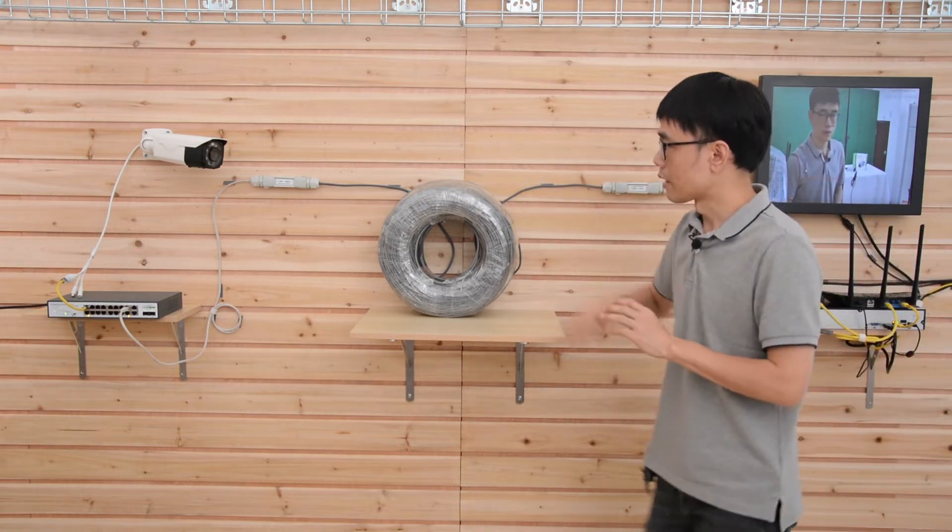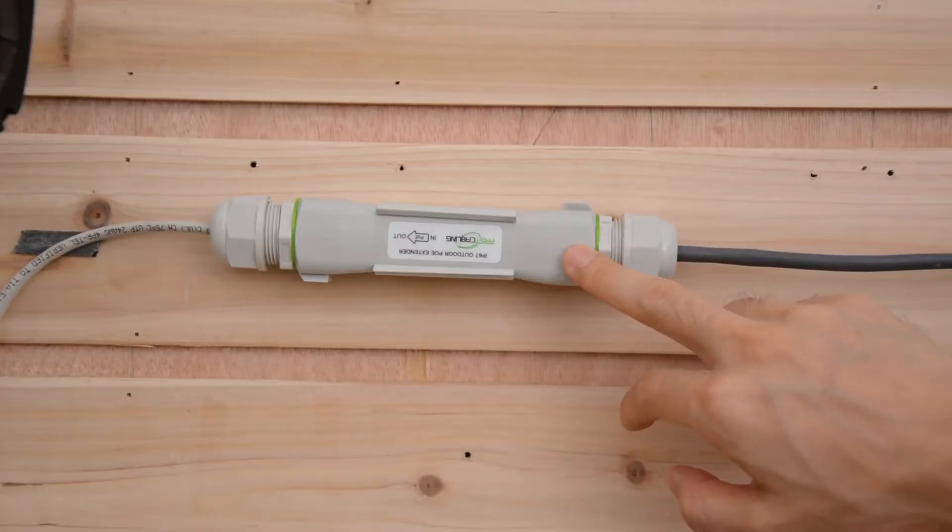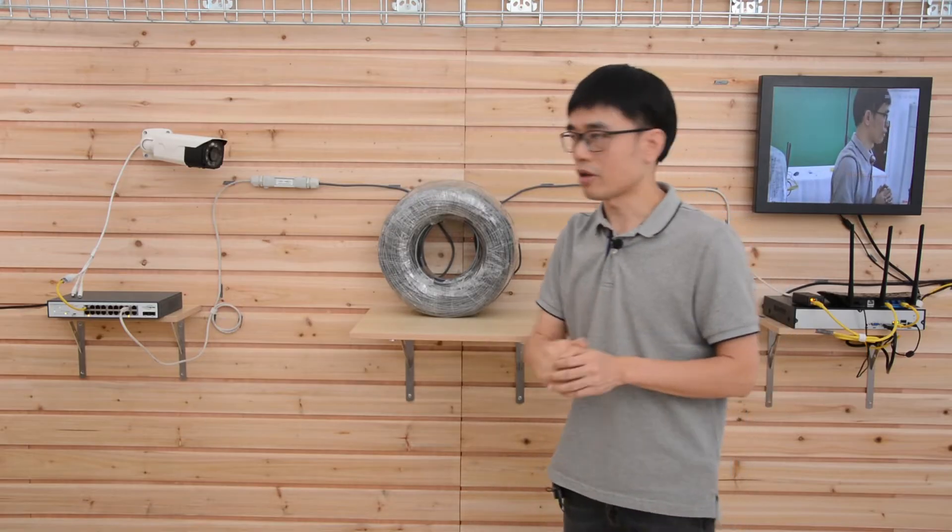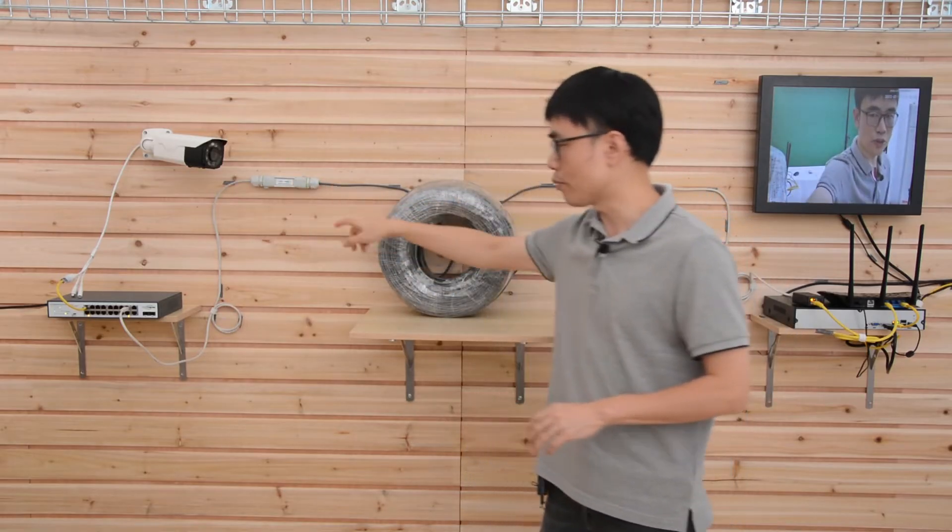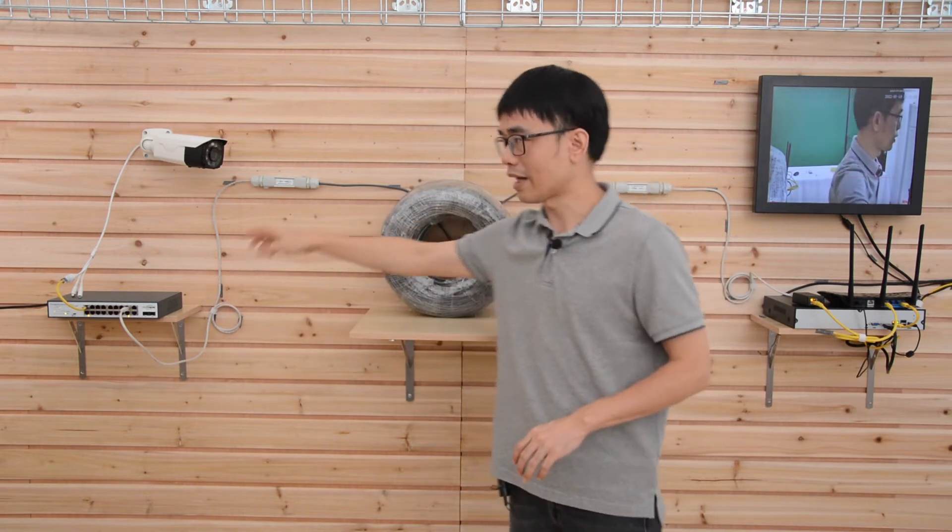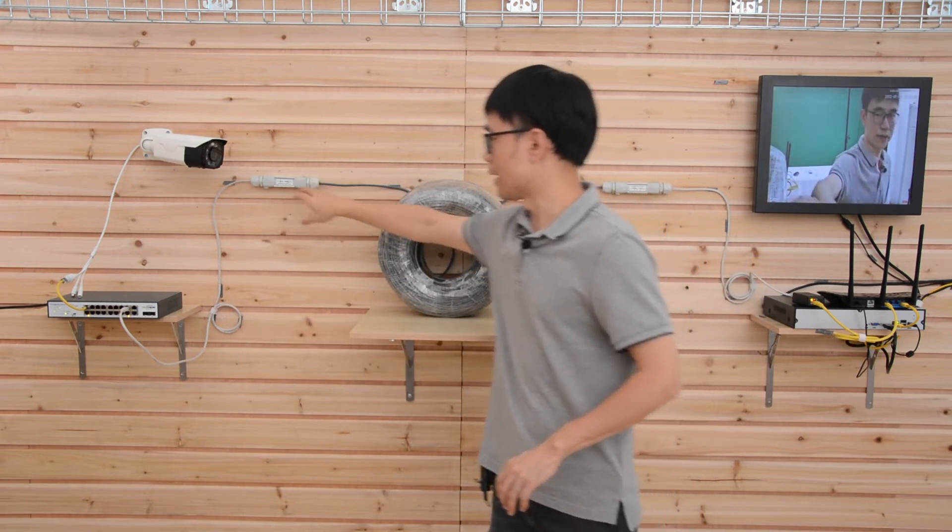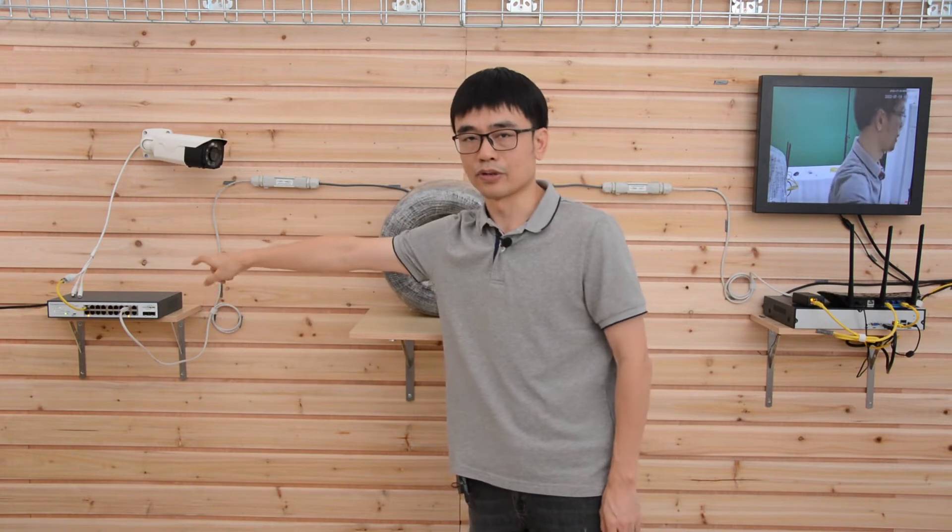The first thing is you need to flip the first PoE extender. What's that supposed to mean? We got input and output. Usually the input will face to the PoE switch, but now we need to flip. That means the output will face to the PoE switch.